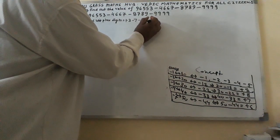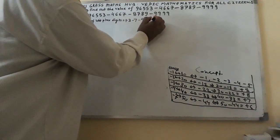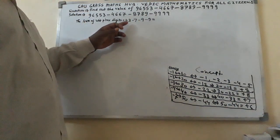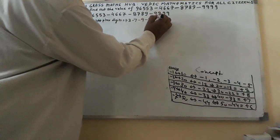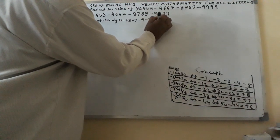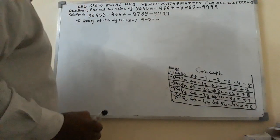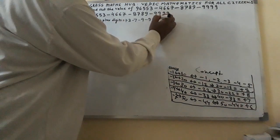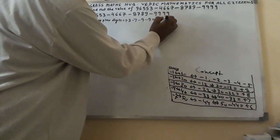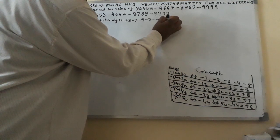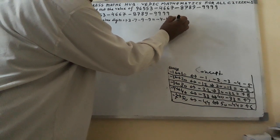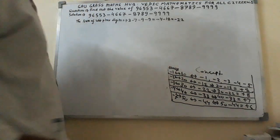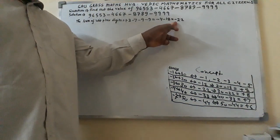Now, with the minus sign: here I get minus 4 minus 18, so we shall get here minus 22.